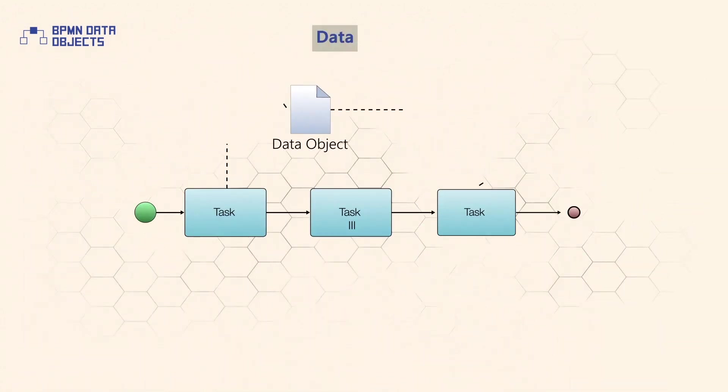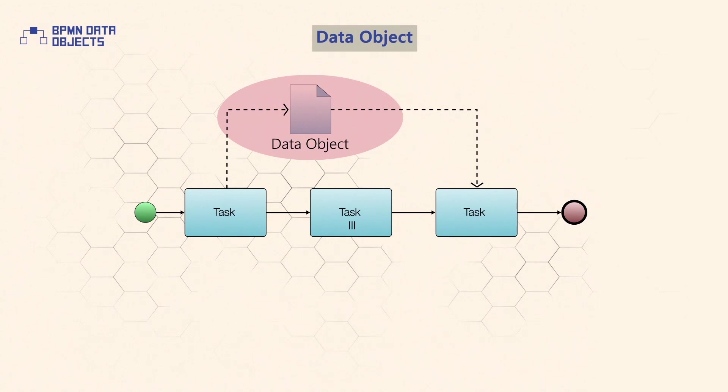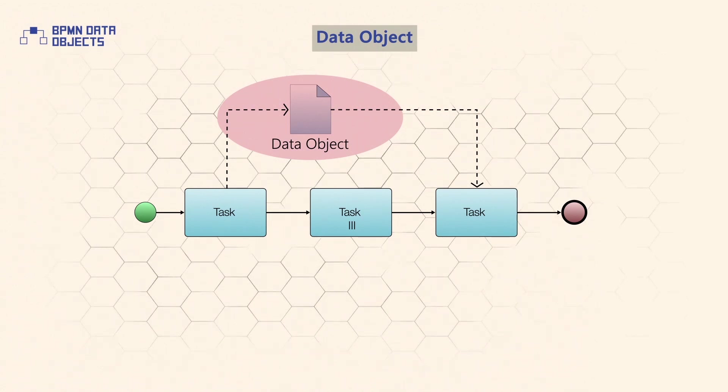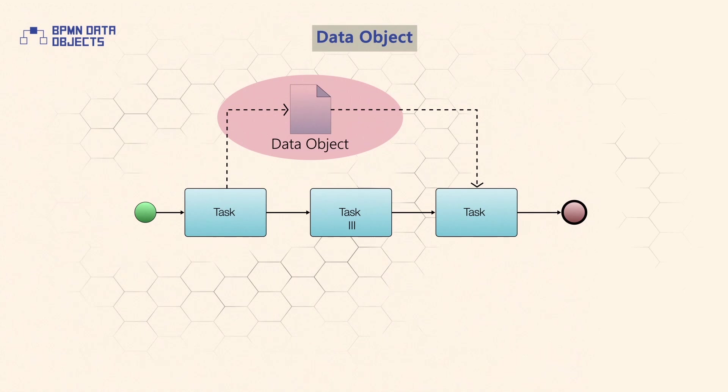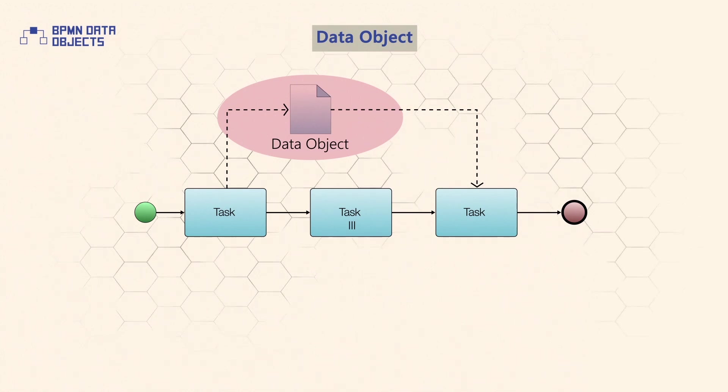The main way of modelling data is the data object element. A data object is only visible within the process level in which it's defined and the variable is disposed of when the process level instance is complete.